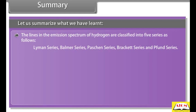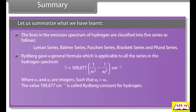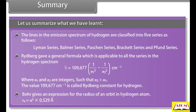The lines in the emission spectrum of hydrogen are classified into 5 series: Lyman, Balmer, Paschen, Brackett, and Pfund series. Rydberg gave a general formula applicable to all series: wave number = 109,677 × (1/n₁² − 1/n₂²) per centimeter. The value 109,677 per centimeter is called the Rydberg constant for hydrogen. Bohr gives an expression for the radius of an orbit: Rₙ = n² × 0.529 angstrom.